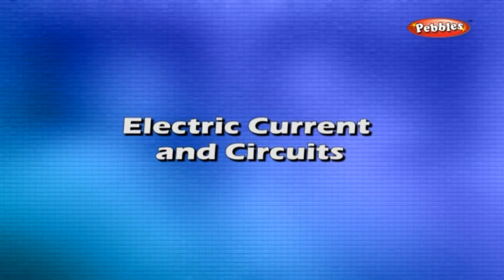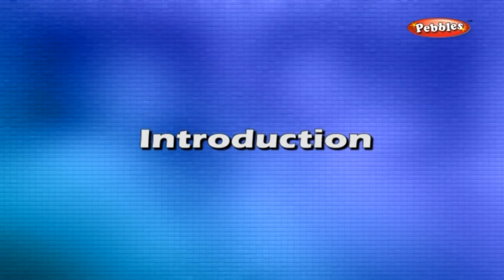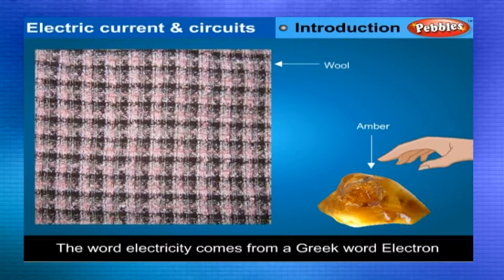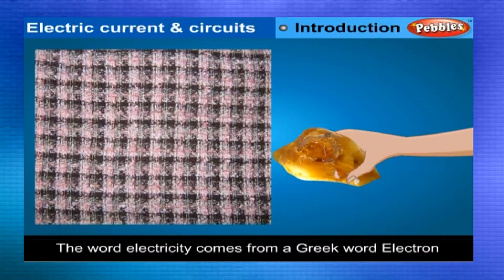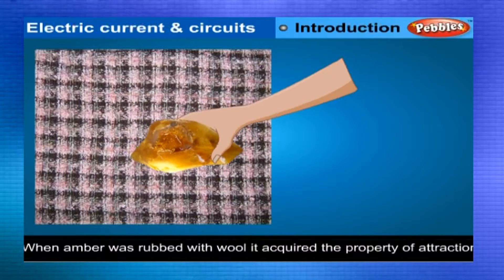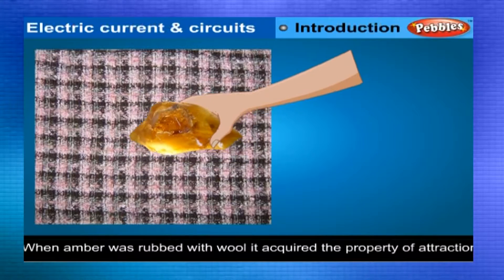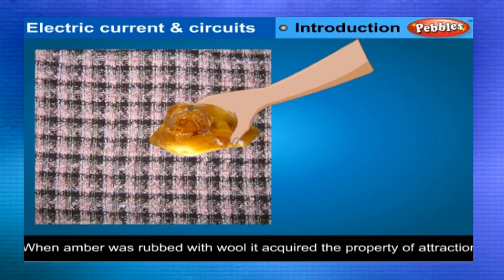Electric current and circuits. Introduction. The word electricity comes from a Greek word 'electron' which means amber, a kind of resin. When amber was rubbed with wool, it acquired the property of attracting small bits of paper or cork.